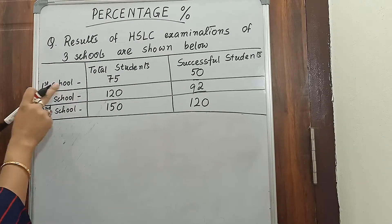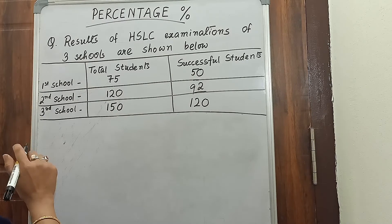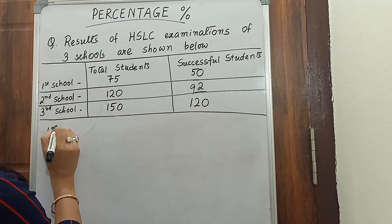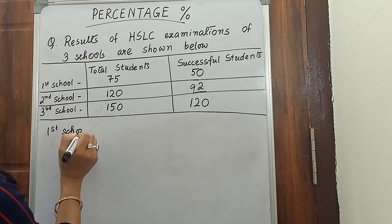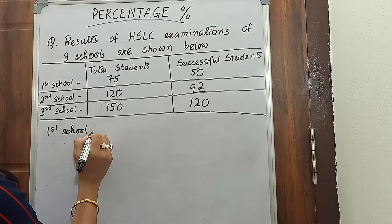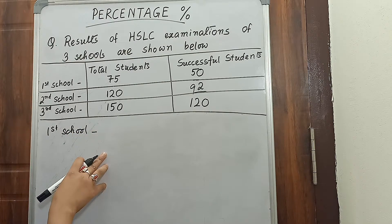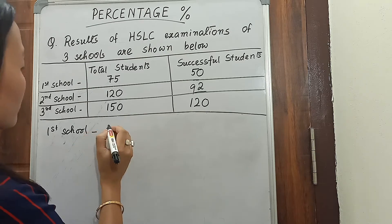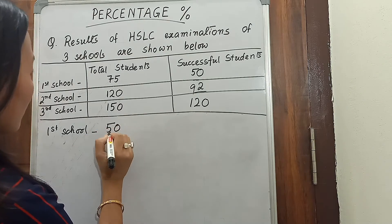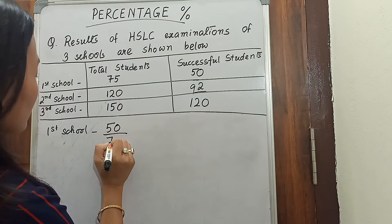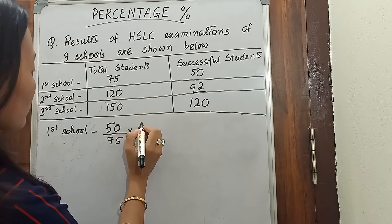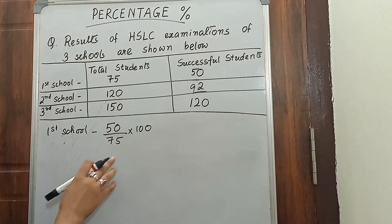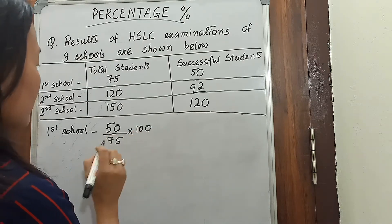In the first school, 50 students passed out of 75 students. For the first school, we'll find out the percentage by multiplying this ratio by 100. So it is 50 divided by 75, multiplied by 100. In order to find out the percentage we have to multiply by 100.